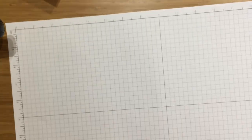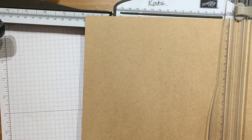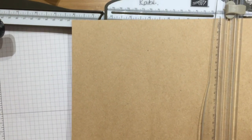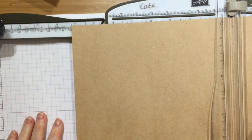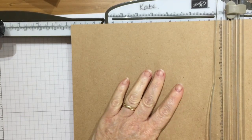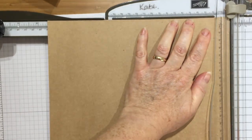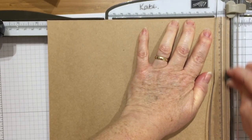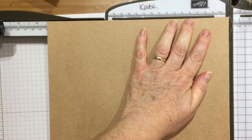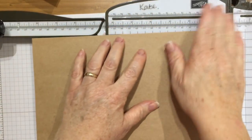First we're going to start with our card base. I've used a piece of craft cardstock, measured at nine and a half inches square. All measurements will be on my blog so you don't need to write them down. To make it fit a little bit better, I'm going to shave a smidge off both sides - just a tiny bit.